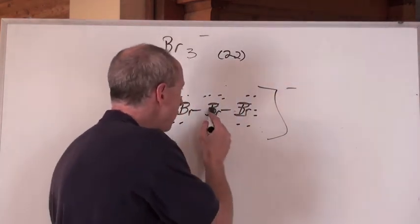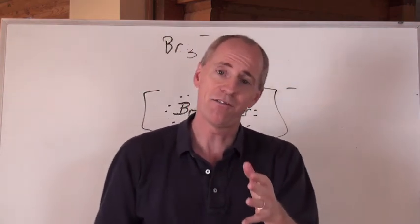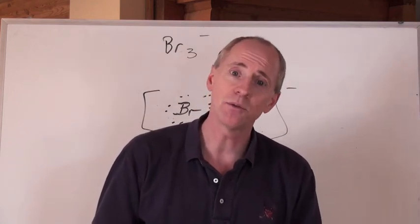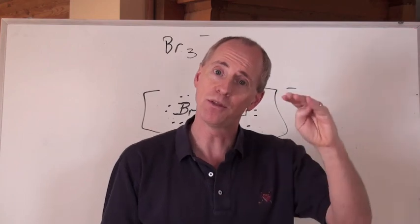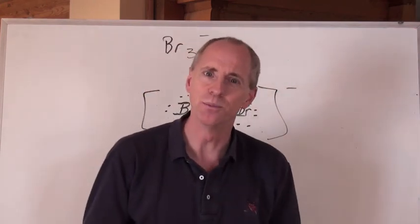Because if there's an F in the middle, and it would have 10 valence electrons around it, fluorine is in n equals 2, and that means it can't exceed the octet rule. So there is no molecule F3 negative, but there is for all the other halogens. Isn't that kind of cool? I think so.